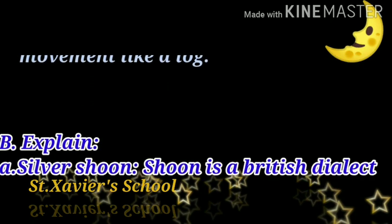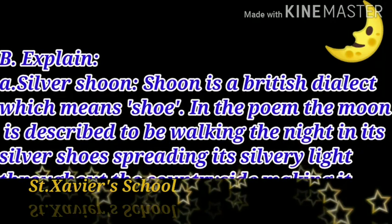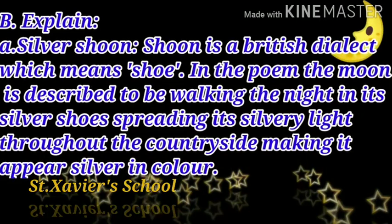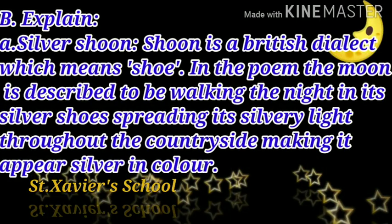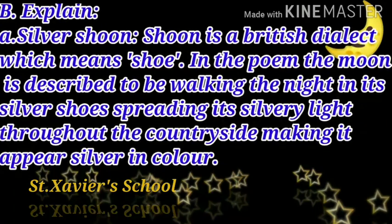Exercise B. Explain A: Silver Shoon. Shoon is a British dialect which means shoe. In the poem, the moon is described to be walking the night in its silver shoes, spreading its silvery light throughout the countryside, making it appear silver in color.